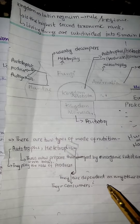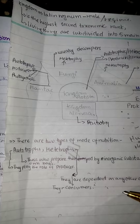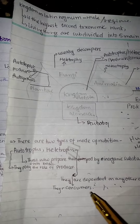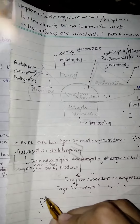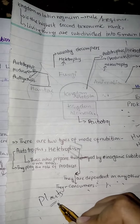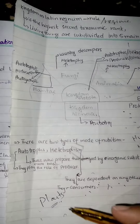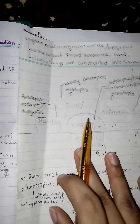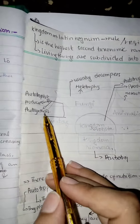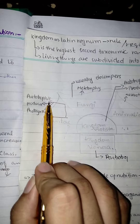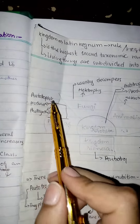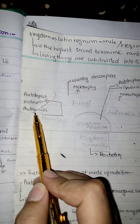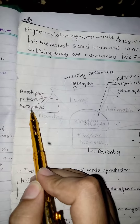For example, lion eats deer and deer eats plants. So, lion and deer are the consumers but plants are eaten by the deer so they are the producers. In kingdom Plantae, they have autotrophic nutrition — they are the producers and they make their food through the process of photosynthesis.